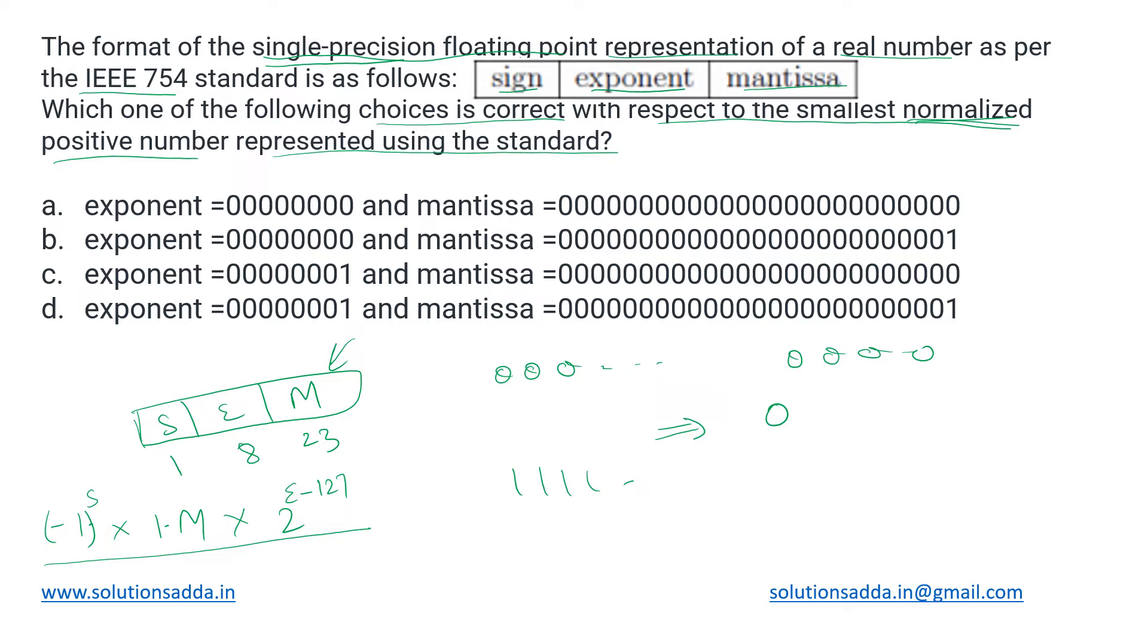Instead, if we have all ones in the exponent and all zeros in the mantissa part, then that represents infinity, either plus or minus infinity depending upon your sign bit. Both of these choices are excluded.